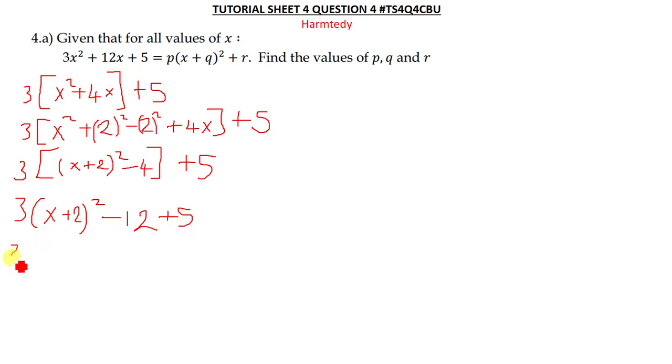3 times negative 4, so you get negative 12 plus 5. We are going to have this, so this is going to be minus 7.